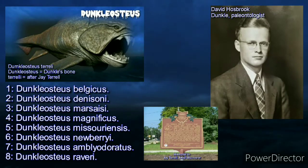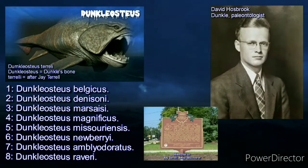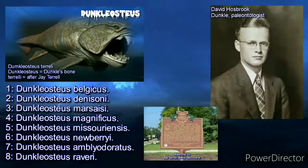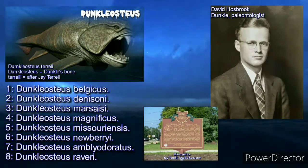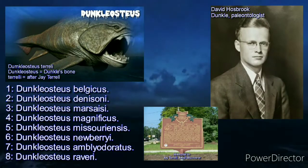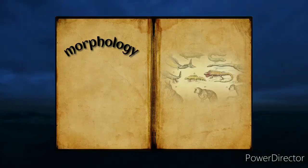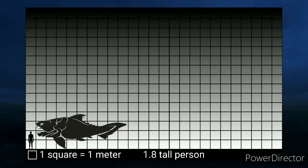Here is a list of other species: Dunkleosteus belgicus, Dunkleosteus denisoni, Dunkleosteus marcesi, Dunkleosteus magnificus, Dunkleosteus missouriensis, Dunkleosteus newberry, Dunkleosteus amblydortus, and Dunkleosteus ravery.